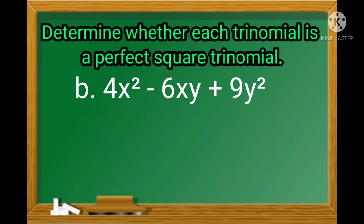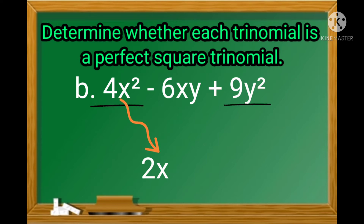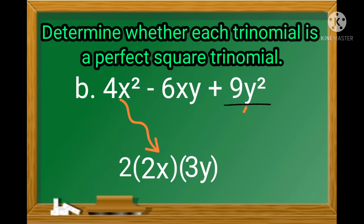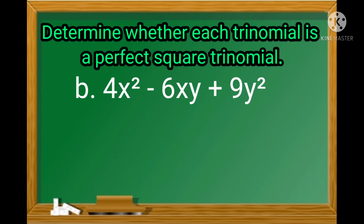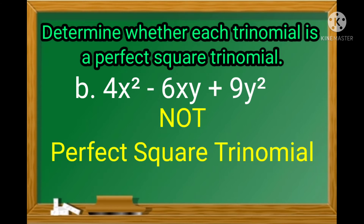What about letter b? Is 4x² − 6xy + 9y² a perfect square trinomial? Let's check. 4x² is a perfect square; its square root is 2x. 9y² is also a perfect square; its square root is 3y. The product of 2x and 3y is 2 × 2x × 3y = 12xy. But the middle term of the given trinomial is −6xy. Therefore, 4x² − 6xy + 9y² is not a perfect square trinomial.